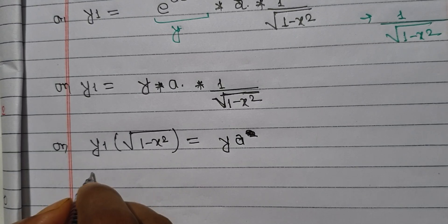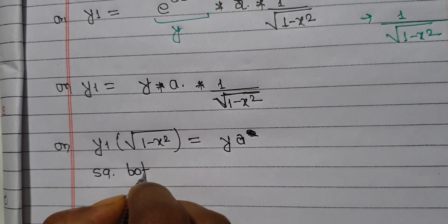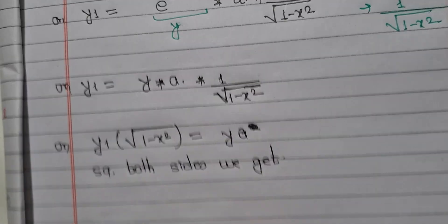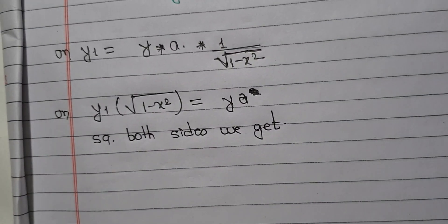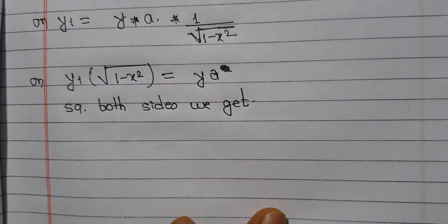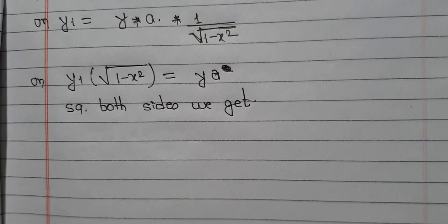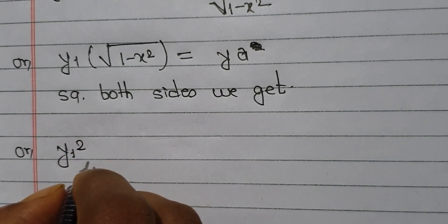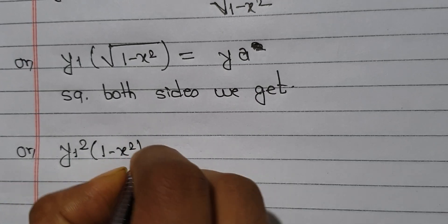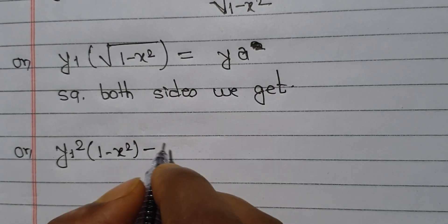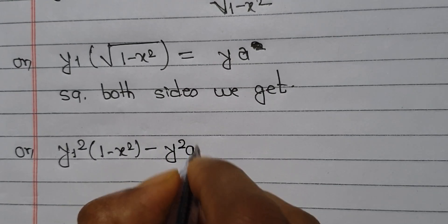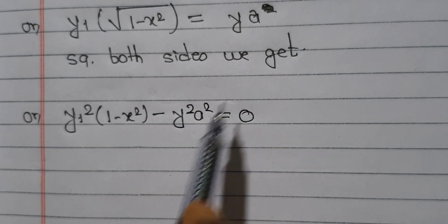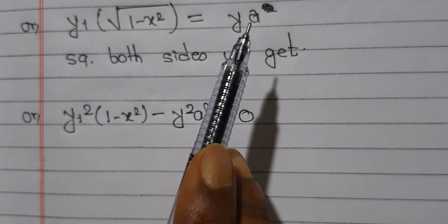Now squaring both sides to remove the root sign makes calculation easier. We get (1 minus x squared) times y1 squared equals a squared times y squared. Rearranging, we get (1 minus x squared) y1 squared minus a squared y squared equals zero.